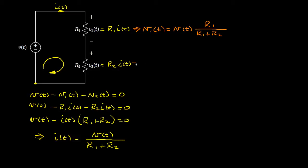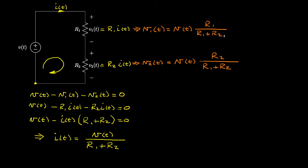We can write a similar relationship for V2. That'll be V of t times R2 over R1 plus R2, since V2 equals R2 times I of t, which is R2 times V of t over R1 plus R2. These two relationships are very important and they make up the concept we call voltage division, or sometimes the voltage divider relationship.